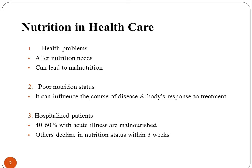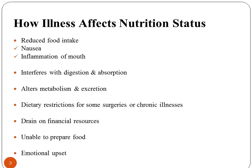Among hospitalized patients, 40–60% with acute illness are malnourished. Illness affects nutritional status by reducing food intake — such as through nausea and inflammation of the mouth — interfering with digestion and absorption, imposing dietary restrictions for surgeries or chronic illness, draining financial resources, and causing emotional distress.